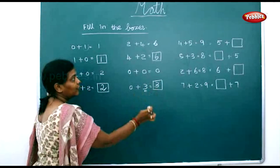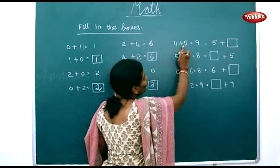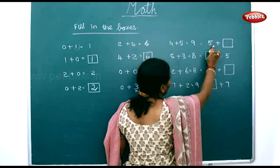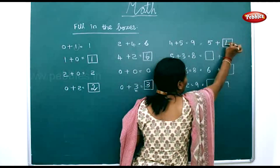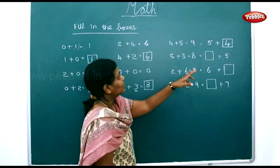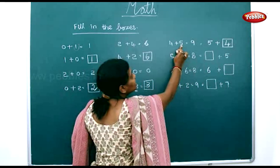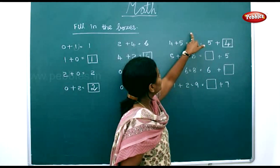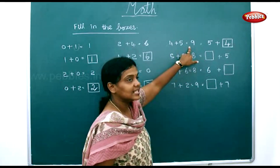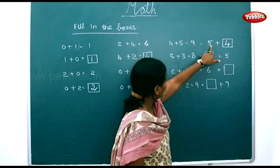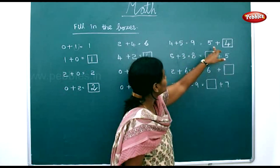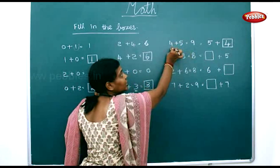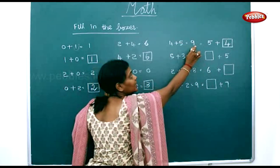4 plus 5 is equal to 9, and 5 plus 4 is also equal to 9. Even if you change the order of the numbers, the sum will be the same. The addition 4 plus 5 is equal to 9 — even if you change the order of the numbers, the sum will still be the same.